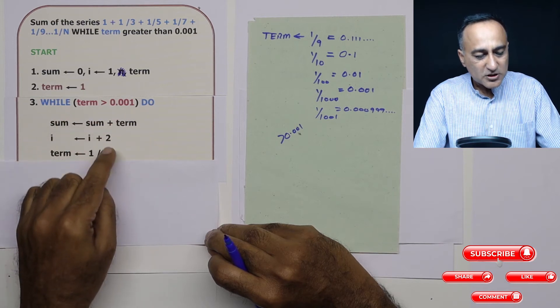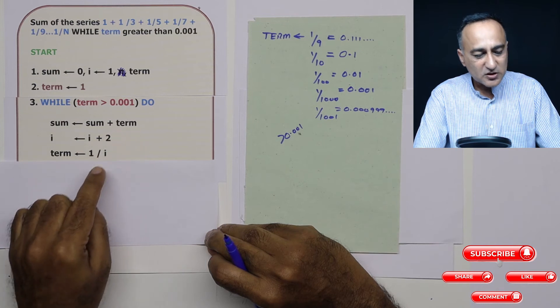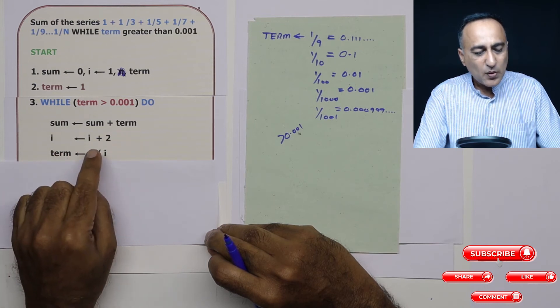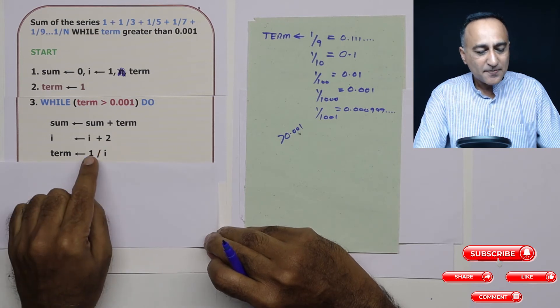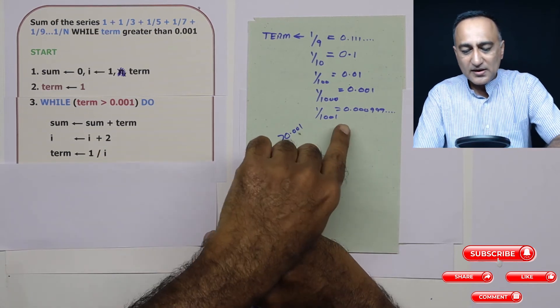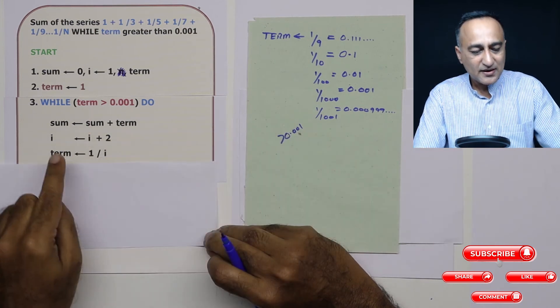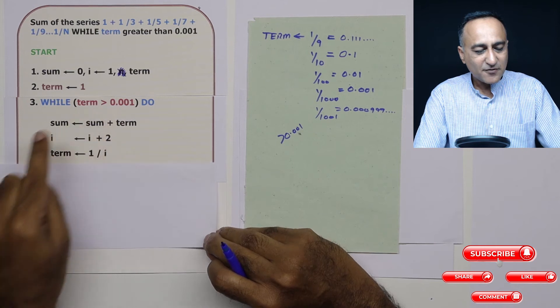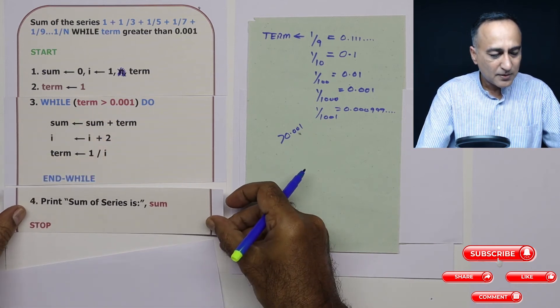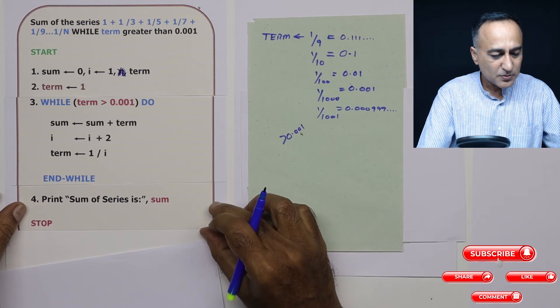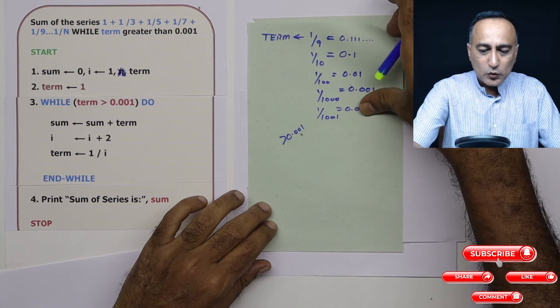So this process of adding the sum with term is going to continue till the value of i reaches 1001. At that point of time, 1 upon 1001 is going to be 0.000999 something like that. Then this condition fails. And then in the last step, I am simply going to come here and print the sum of this particular series as sum.